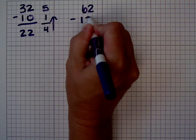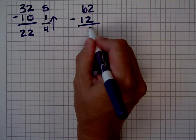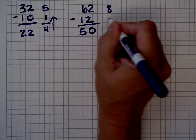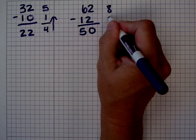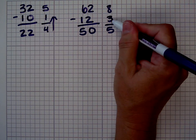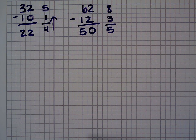62 minus 12. 2 minus 2 is 0, 6 minus 1 is 5. The digital root of 62 is 8, the digital root of 12 is 3, and the digital root of 50 is 5. 5 plus 3 is 8, so we've done our problem correctly.